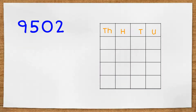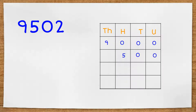Here's another number with four digits. Four digits is telling me thousands, hundreds, tens and units. So I'm going to have nine thousands, five hundreds, zero tens and two units. Together they make nine thousand five hundred and two.